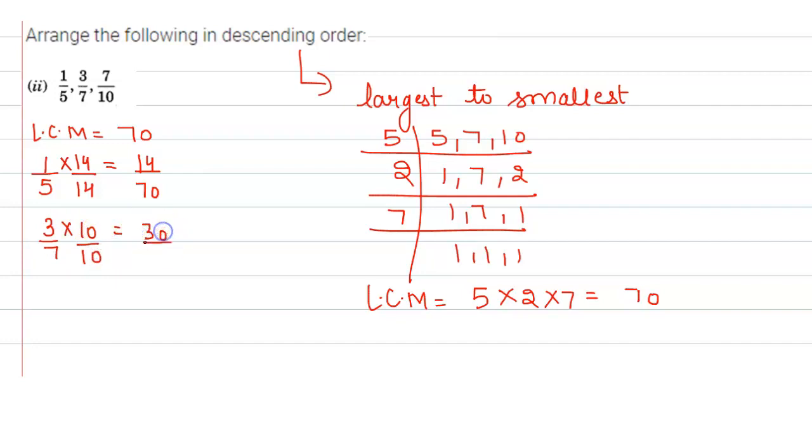The last one is 7 by 10. 70 divided by 10 is 7. Multiply and divide by 7. Here we get 49 by 70.